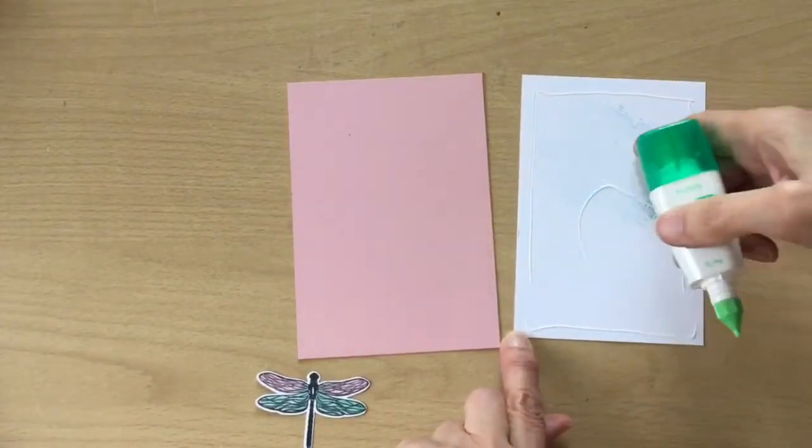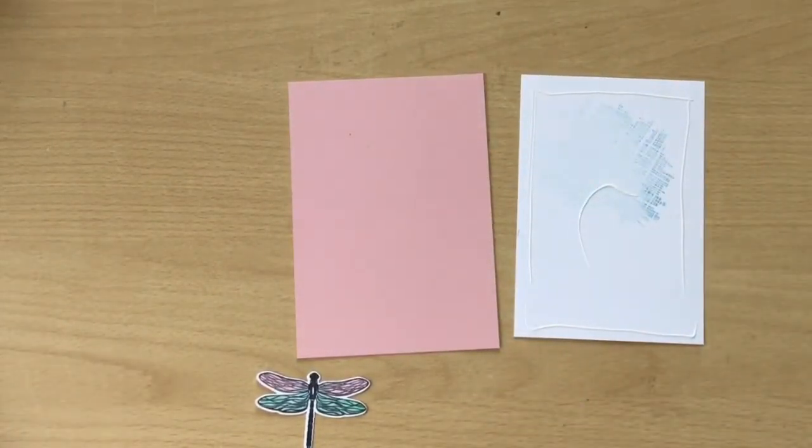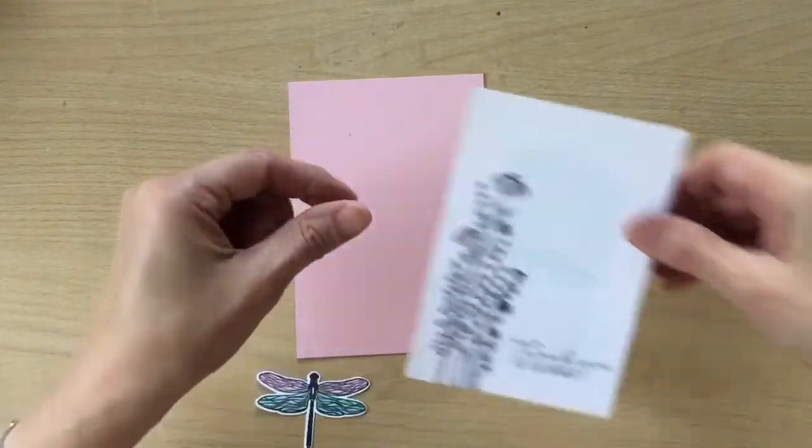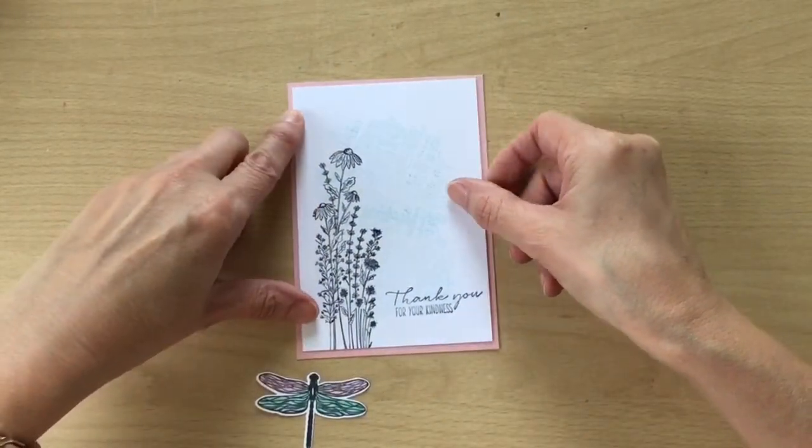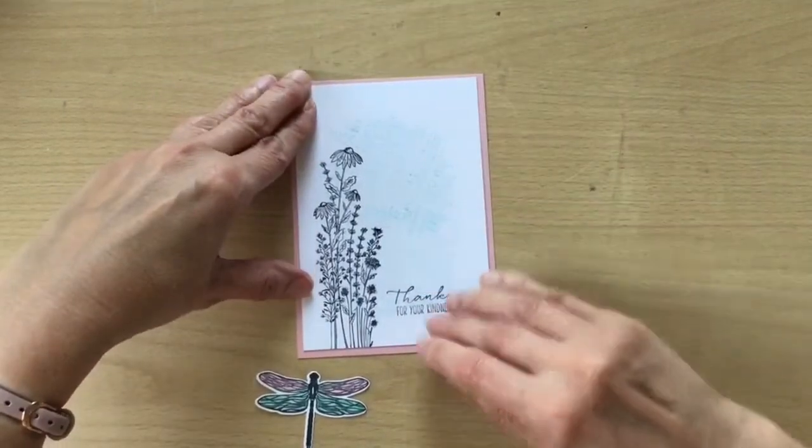So you can see where I went wrong on the back there. Just turn your paper over and do it again. So just some wet glue. Stick that to the Blushing Bride.